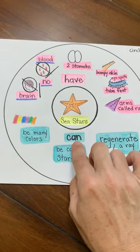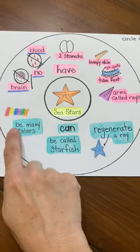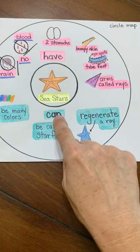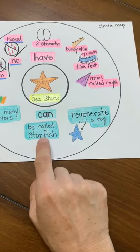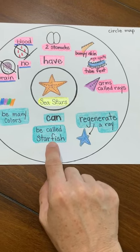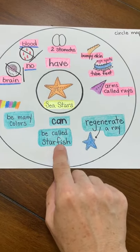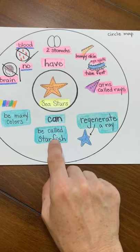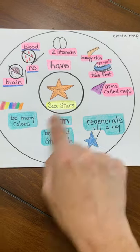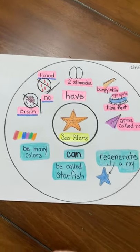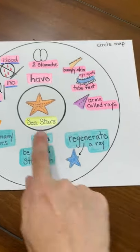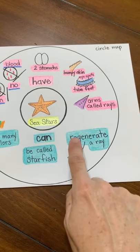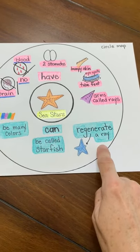We have sea stars can be many colors. Sea stars can be called starfish — I wasn't sure how to draw that — but they're actually not fish. That's why we know them as starfish, but they're not a fish, which is why they call them sea stars. Stars of the sea. And then sea stars can regenerate a ray.